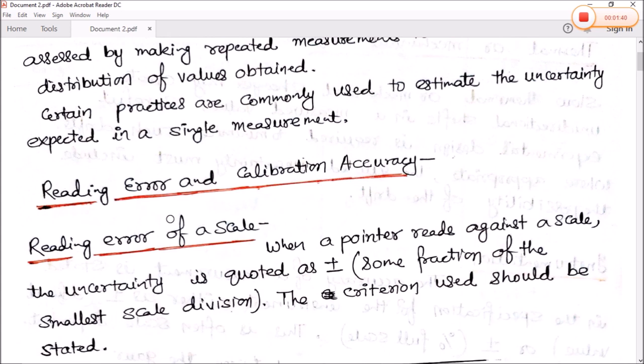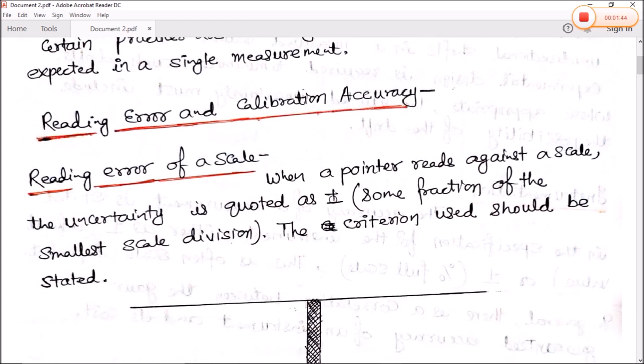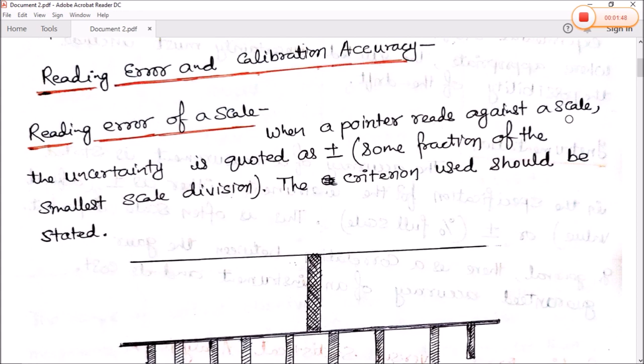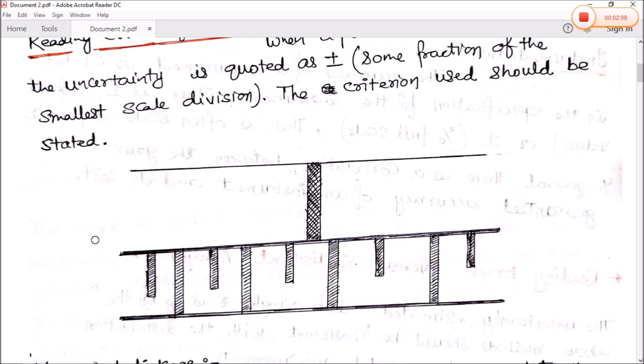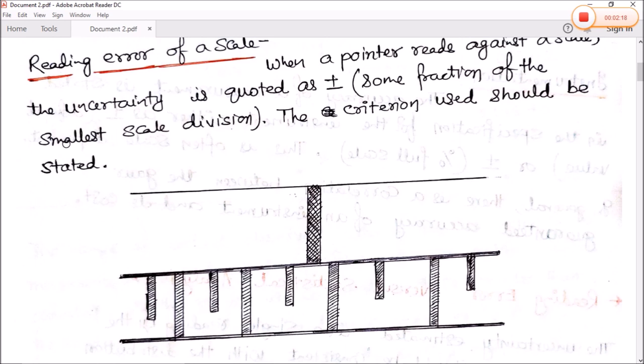Next is reading error and calibration accuracy. So what is reading error of a scale? When a pointer reads against a scale, the uncertainty is quoted as plus minus some fraction of the smallest scale division. Then the criteria used should be stated. That means reading error is what we are going to check. This type of error we call reading error of a scale. Vernier caliper and screw gauges: we call main scale reading, circular scale reading, and vernier scale reading. This value is plus or minus. This error we call add or subtract.